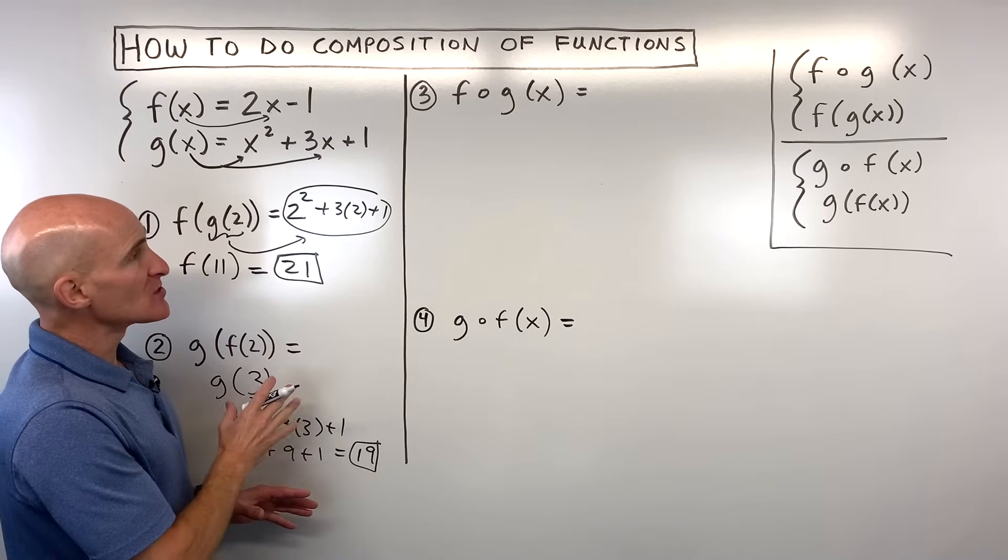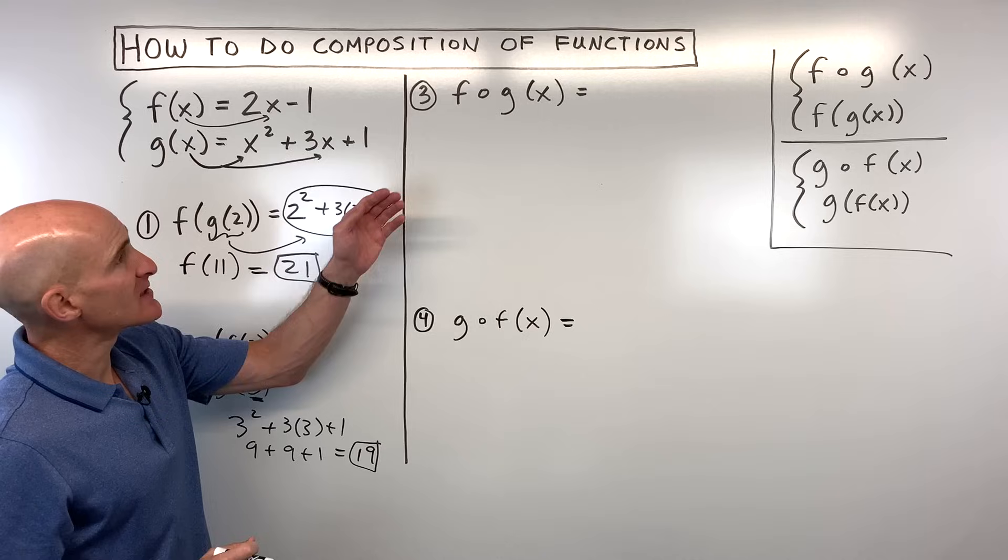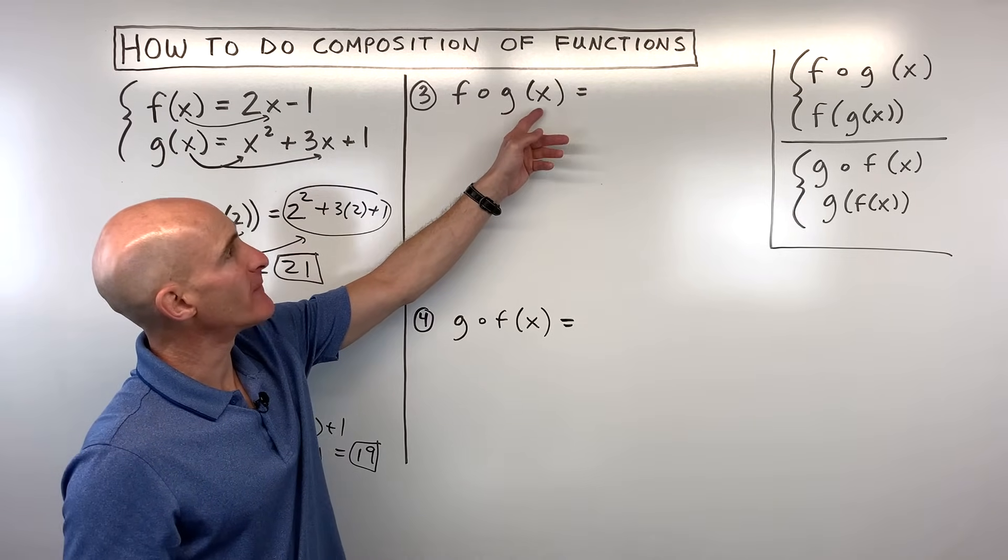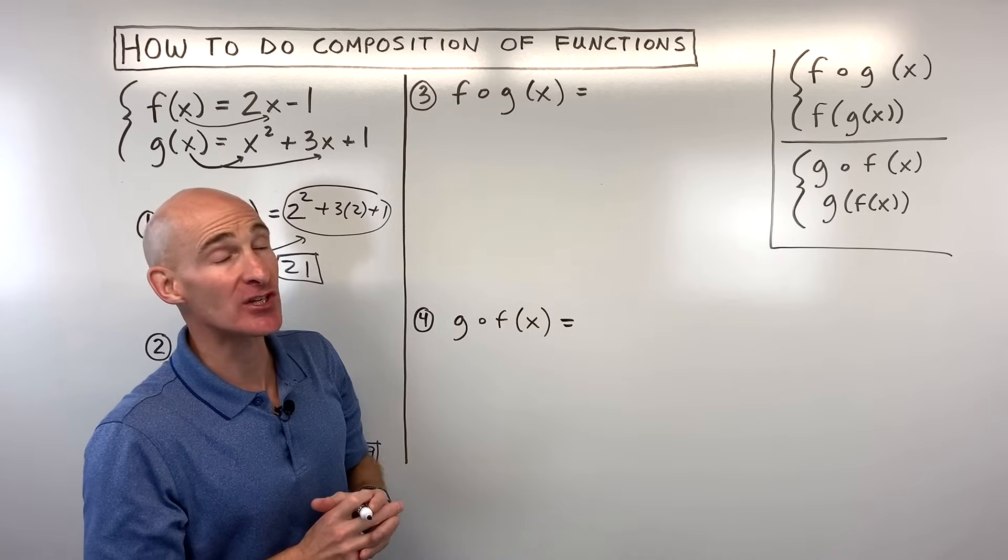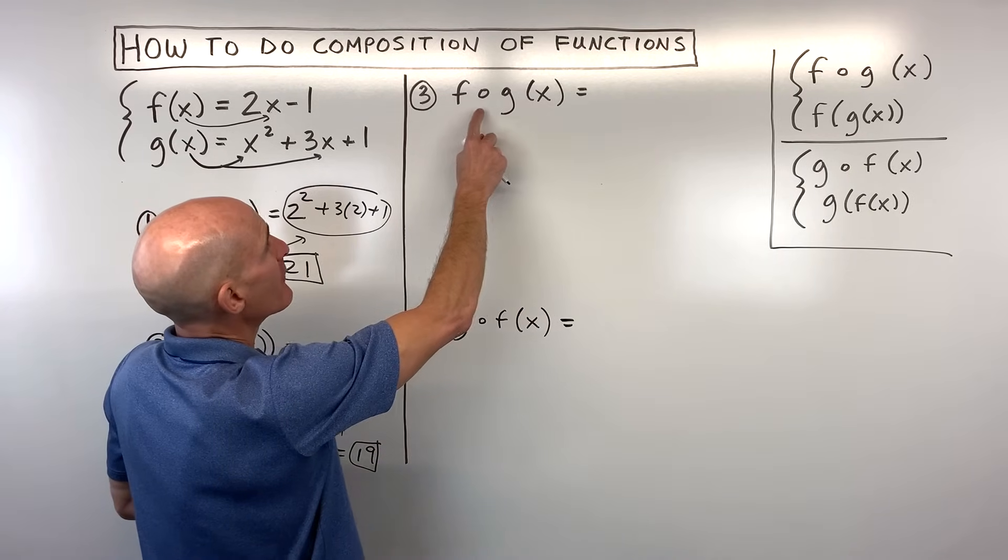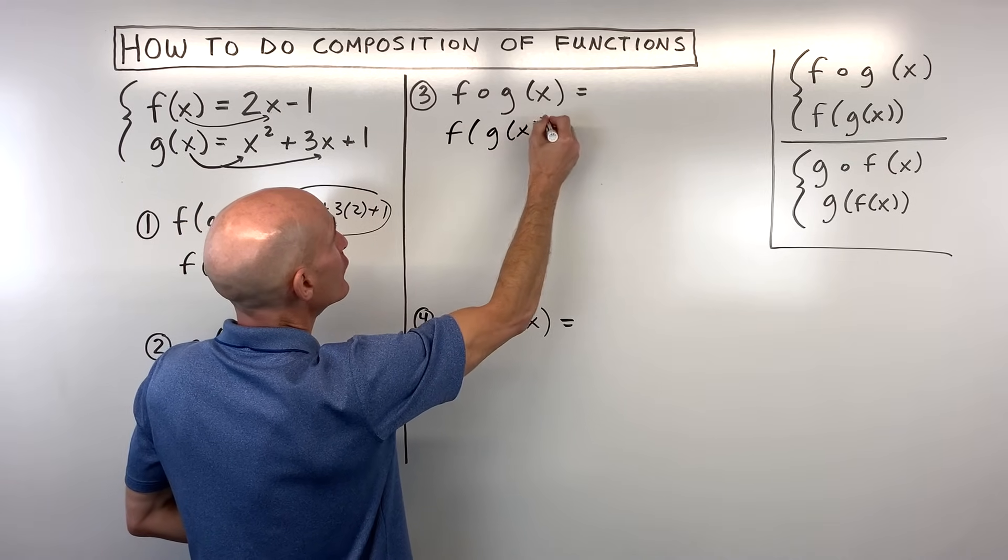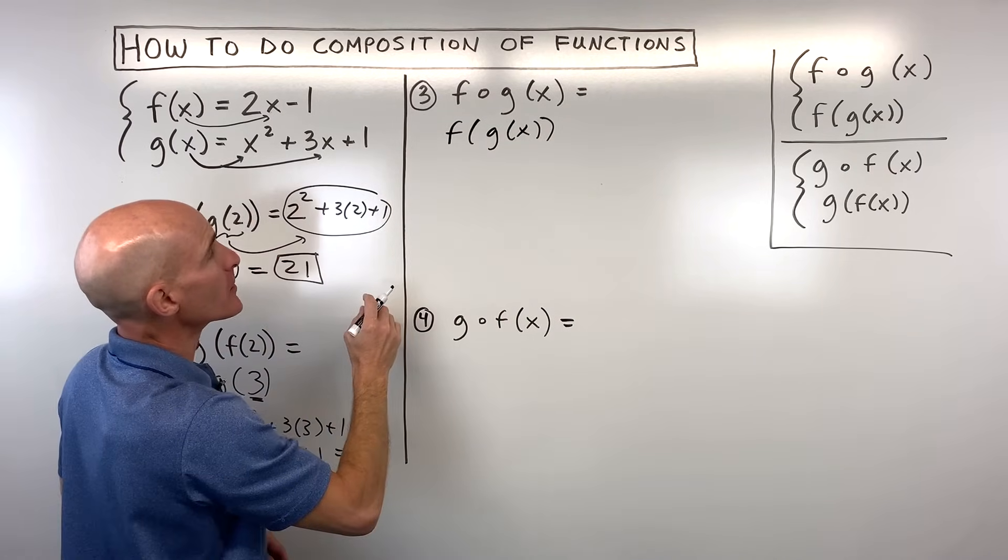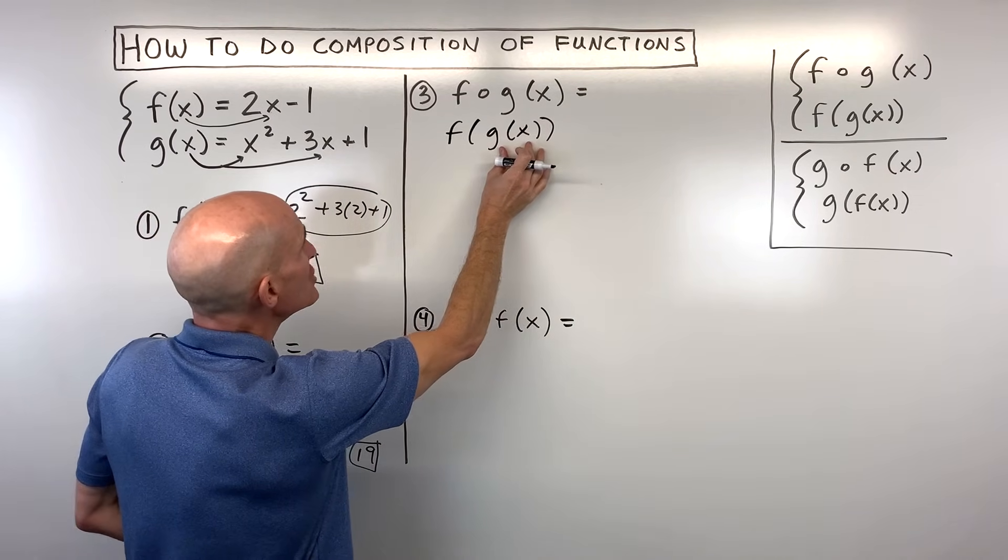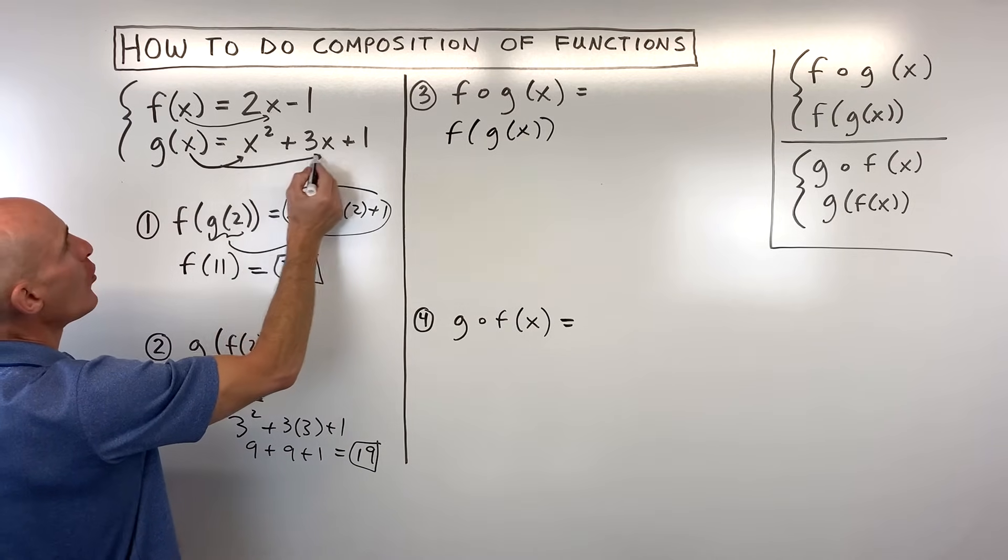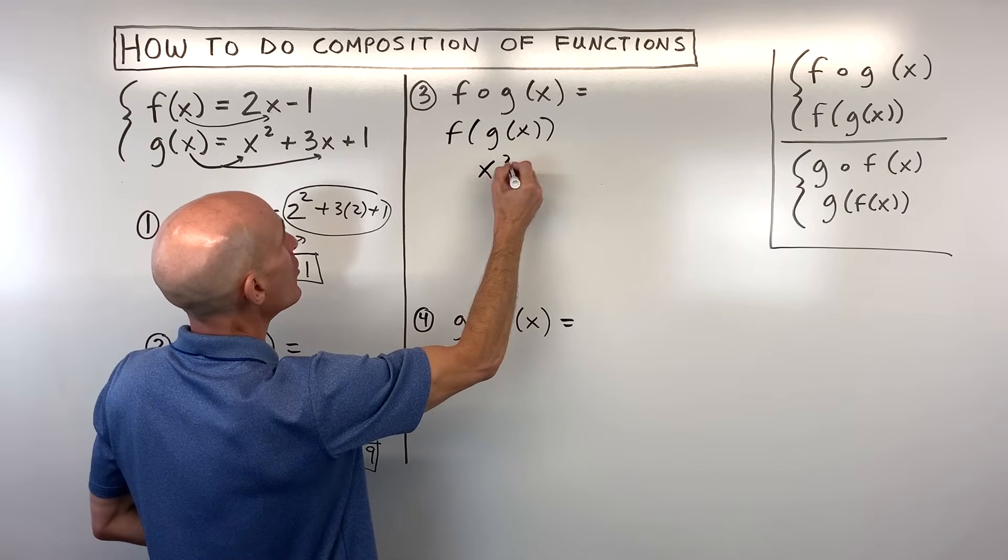Now these problems usually students can tackle pretty well but what's a little bit trickier here is when we're trying to write a function in terms of x using this composition. So here what we're doing is f of g of x. Let's start by rewriting this in my preferred form, this f of g of x form here. So we're going to say well what is g of x? Well g of x is this whole quantity right here, x squared plus 3x plus 1.